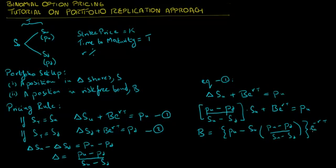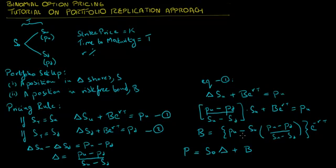Since these positions exactly replicate the payoff of the option, under no arbitrage the present value of the stock and bond position must equal the price of the option. Therefore, let P denote the price of the option. P equals the current stock position times delta plus the current value of the bond position. So we have learned how to price an option using the portfolio replication approach in a discrete time framework.